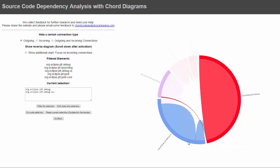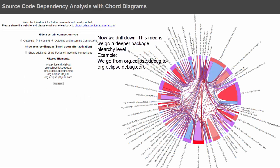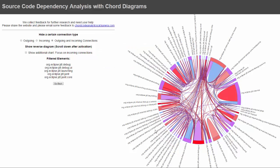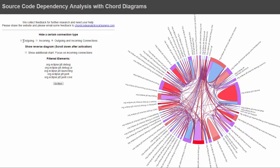I start selecting again and see step by step which package calls which package. When I hover over the different connections, I see the amount of method calls. Now I drill down into the selection. Drill down means I am at a certain package level and now I go back and expand the package level one step further to get the packages that are lower in the hierarchy.